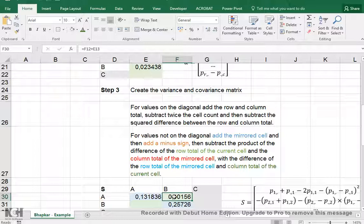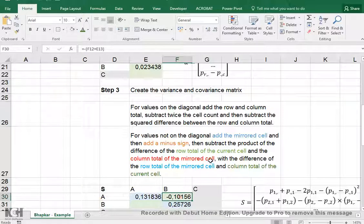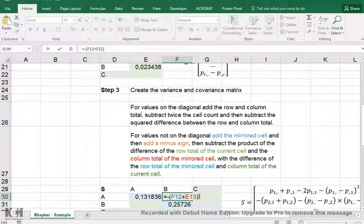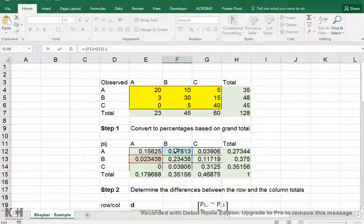And then add a minus sign, and what's meant there is actually to say minus, so this whole thing becomes negative. Then subtract the product of the difference of the row total of the current cell and the column total of the mirrored cell. So minus, and then the difference of the row total of the current cell. The row total of the current cell is this one,